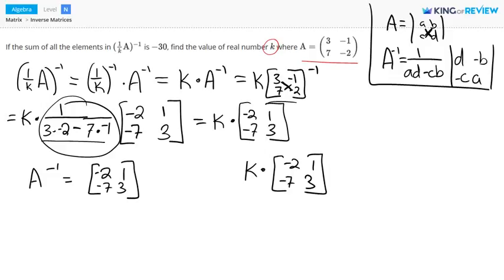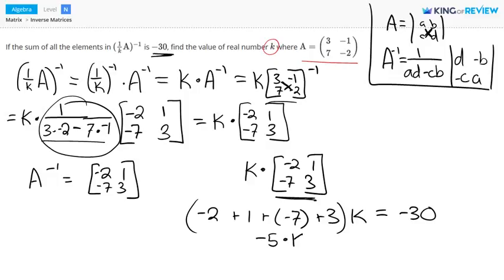And now what we want to do is add up all of the values here. So negative 2 plus 1 plus negative 7 plus 3. We're going to add those up and multiply it by k, and that equals negative 30 because we were given that value. So when we add these up, we get negative 5 times k equals negative 30. And if you divide by negative 5 on both sides, you get k is equal to 6. So 6 is the final answer.